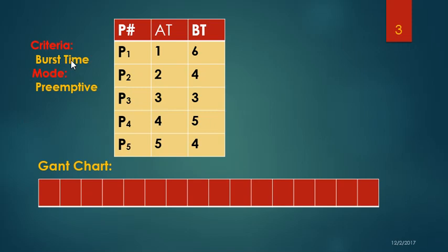The criteria for SJF is burst time, because scheduling depends on the burst times of processes. We are always looking for the smaller burst time. The mode for Shortest Job First is preemptive, which means the CPU can be taken away from a process at any time. Here we have five processes: P1, P2, P3, P4, and P5.